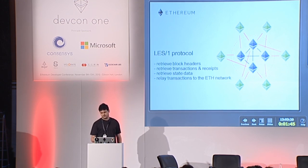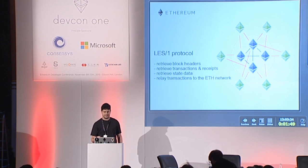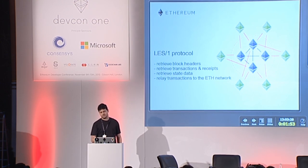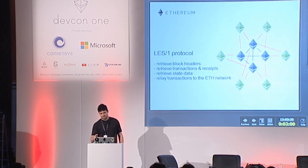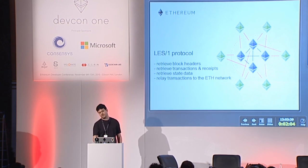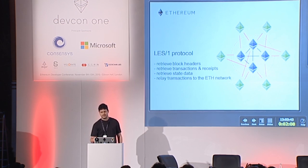This protocol is for on-demand retrieval of block and state data, and also it can relay transactions to the ETH consensus network, because the LES network is somewhat separated from the consensus network. The full nodes support both ETH and LES protocols, serving the light nodes, and the light nodes are only communicating with the LES protocol.